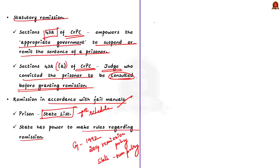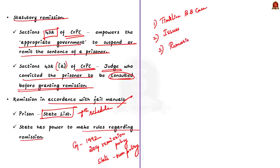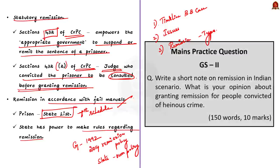In this discussion, we saw about the timeline of events in the Bilkis Banu case, the major issue in the Supreme Court judgment cited by the author, and finally remission and its three types: constitutional remission, statutory remission, and remission earned in accordance with jail manuals. Now let us move on to the next article discussion.